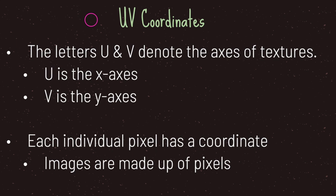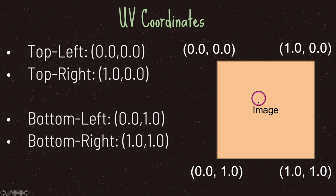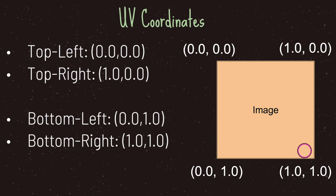Keep in mind that each individual pixel has a coordinate and images are made up of many many pixels. The top left of our texture image has coordinates 0.0 and 0.0. The top right has 1.0 and 0.0. The bottom right has 1.0 and 1.0. The bottom left has 0.0 and 1.0. All other pixels are a variation between 0.0 and 1.0 in the given U or V axis.